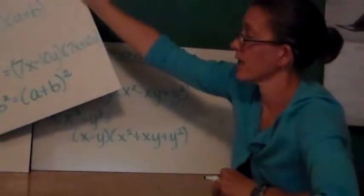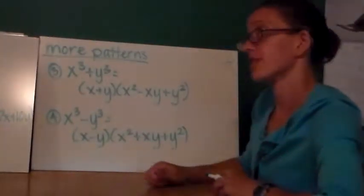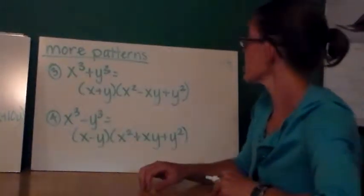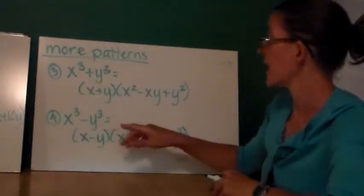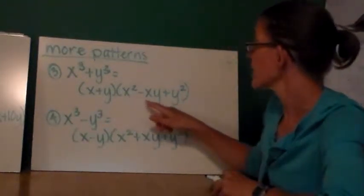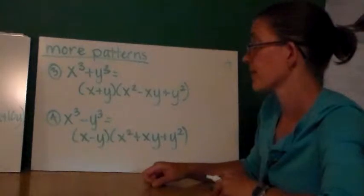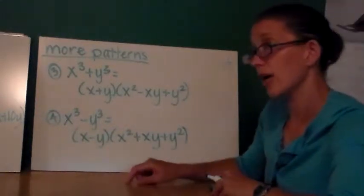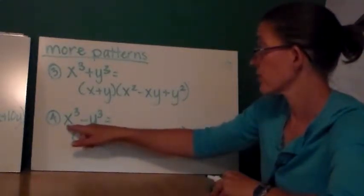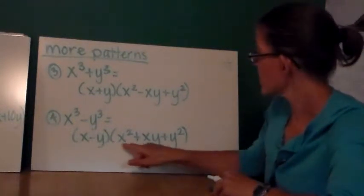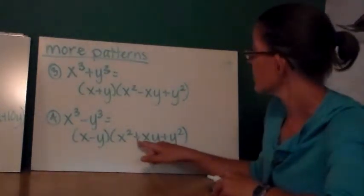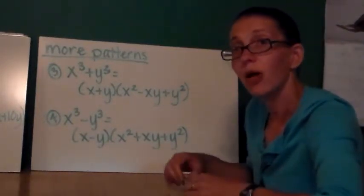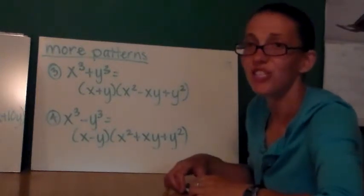And the final two special patterns that I want you to know about are the sum and difference of cubes. You've already taken algebra 2. You've already learned about these. x cubed plus y cubed equals x plus y times the quantity x squared minus xy plus y squared. If you have a difference of two perfect cubes, start out with x minus y cubed. Cube root of the first minus cube root of the second. The second trinomial is x squared plus xy plus y squared. I hope this brief review of factoring has been helpful to you. Thanks so much and have a great day.